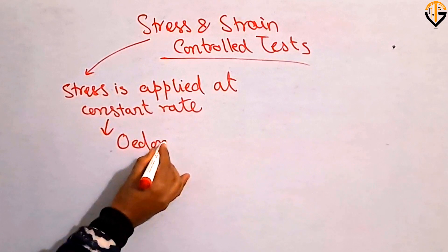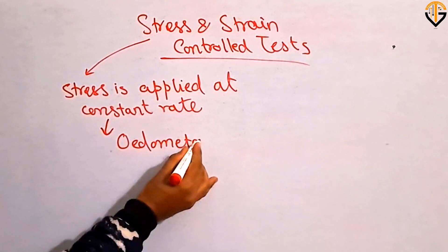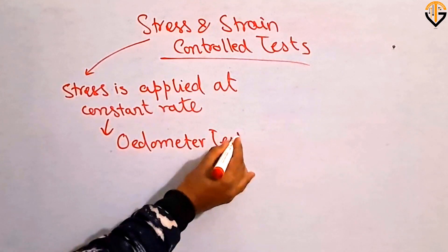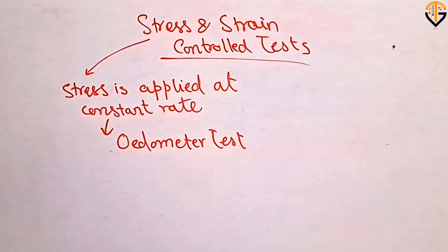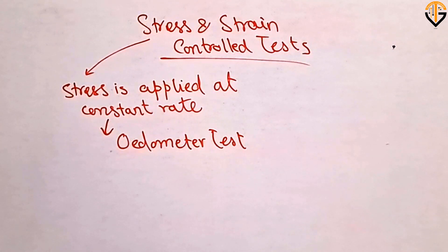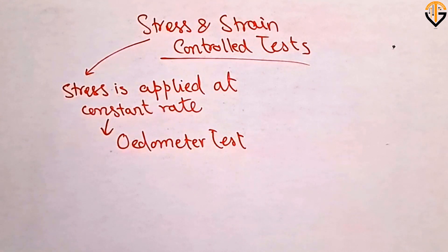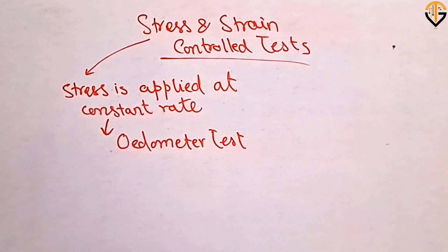An example is the oedometer test. In the oedometer test, you apply stress at various intervals — for example, you apply the first increment of load of 25 kPa for the first 24 hours, then you apply another increment of load for the next 24 hours. This is how you control the stress in the oedometer test, and this type of test is called a stress control test.